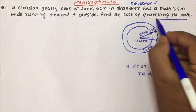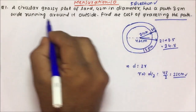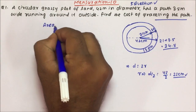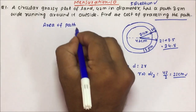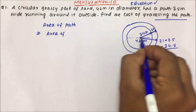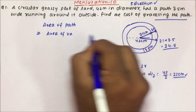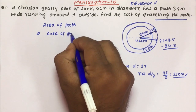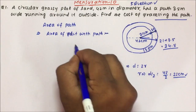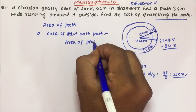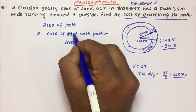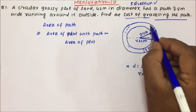The question asks us to find the cost of graveling the path. To find the cost, we need to calculate the area of the path. The area of the path equals the area of the plot with path minus the area of the plot alone. This difference gives us the path area.